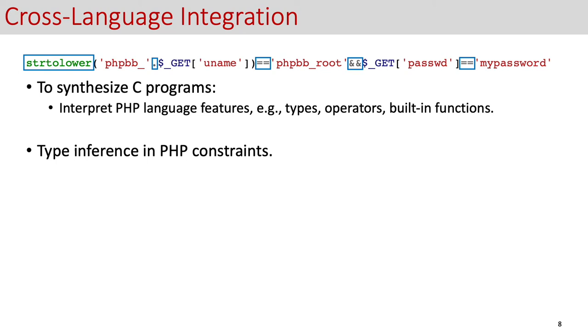For such tasks, we first use a type inference to infer the types of the variables that appear in the constraints. Besides, we perform a syntax mapping to the implementations inside the PHP interpreter for the usage of the synthesized C programs.